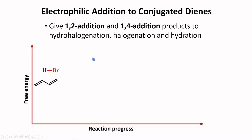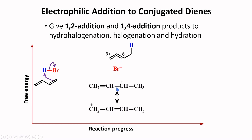For example, if we start from 1,3-butadiene and react it with HBr, this double bond may abstract a proton and break this bond to form an allylic carbocation. This allylic carbocation is stabilized by resonance — the positive charge is distributed among several carbon atoms via transfer of the pi electrons, providing a stabilizing effect.